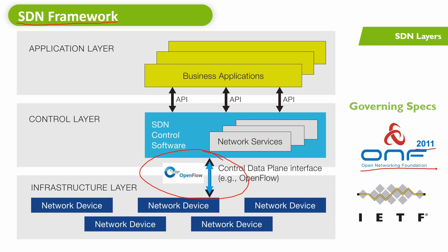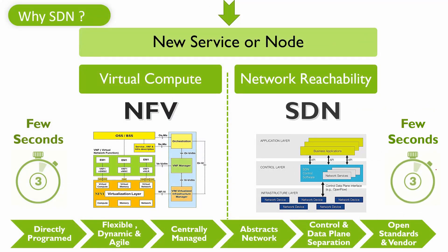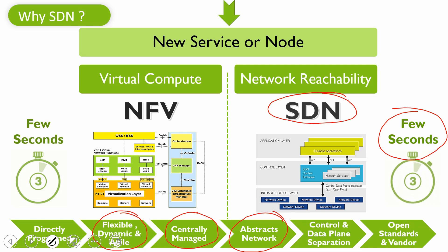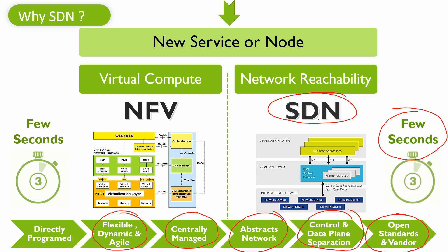Coming back to our first slide where network reachability was a big problem — with SDN, we can now get network reachability done within seconds, solving our major problem. To quickly recap, SDN-based networks are directly programmable, flexible, dynamic, agile, and centrally managed. They abstract the network and decouple the control and forwarding plane based on open standards.